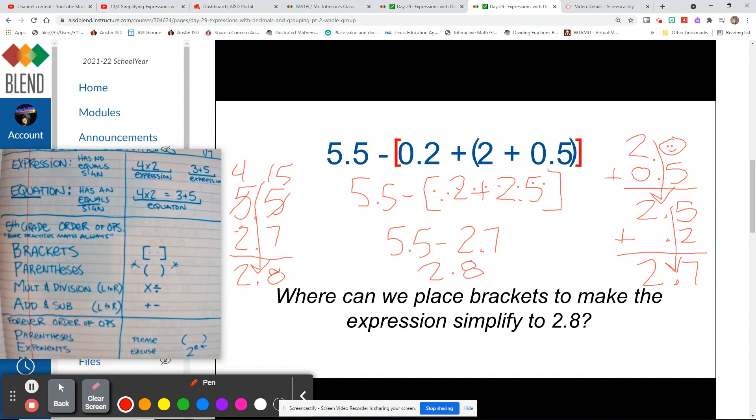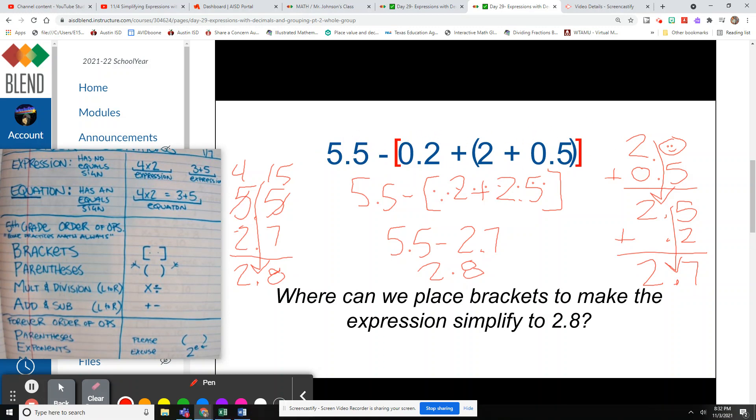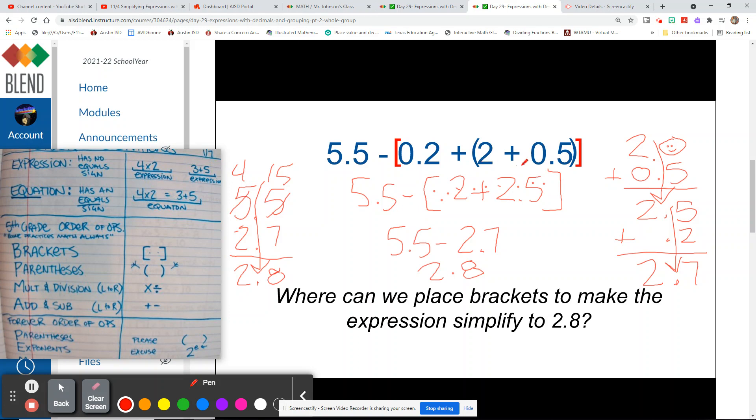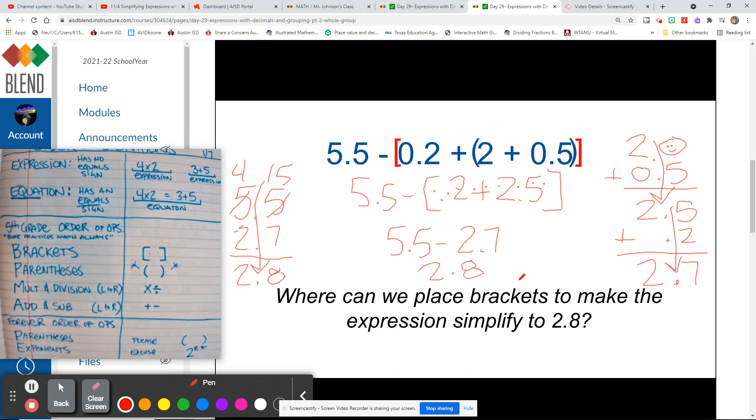By putting brackets around this section, we were able to get the largest number possible to subtract. If we didn't put the brackets there, we would have subtracted 0.2, but then we would have gone right around and added 2.5 again. So by putting this all in brackets, we turned the number we were subtracting into a larger number. That is the power of grouping symbols.